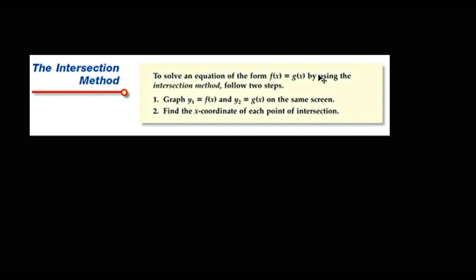To solve an equation of the form f(x) equals g(x) using the intersection method, follow two steps: first, graph f(x) and g(x) on the same screen; then find the x-coordinate of each point of intersection.